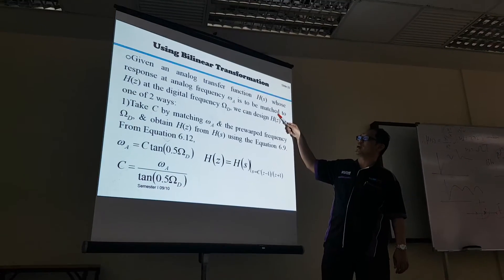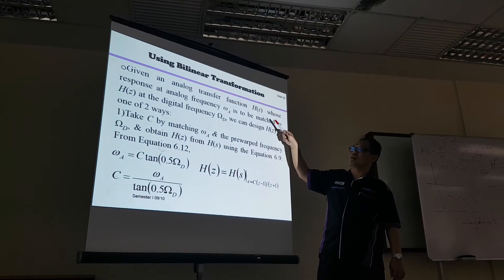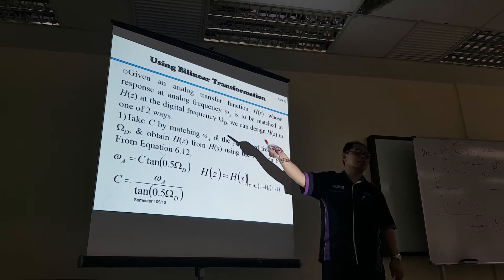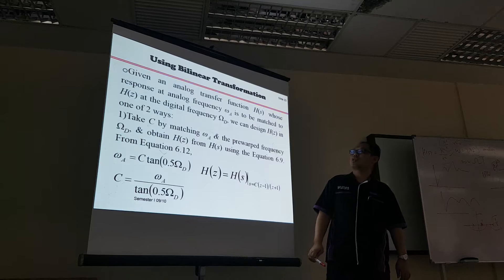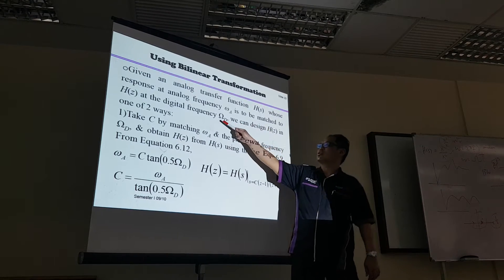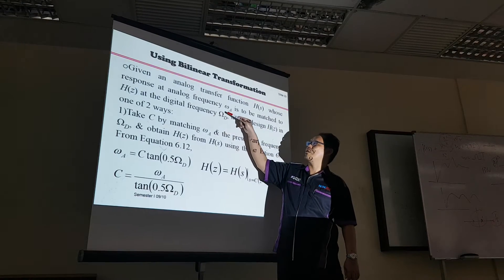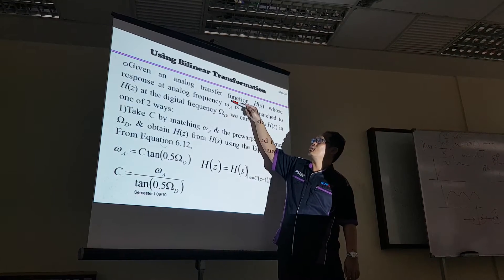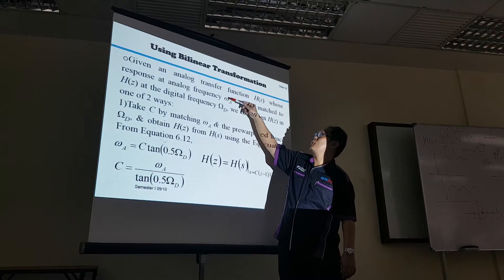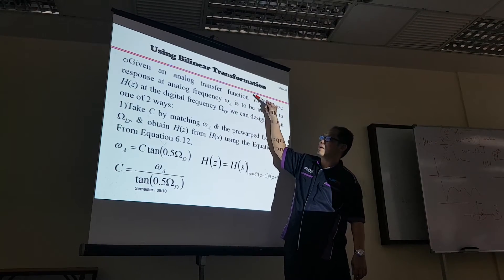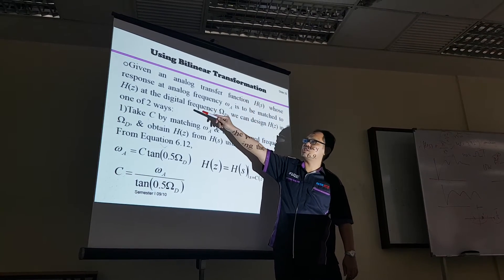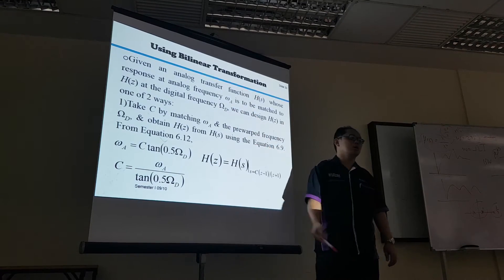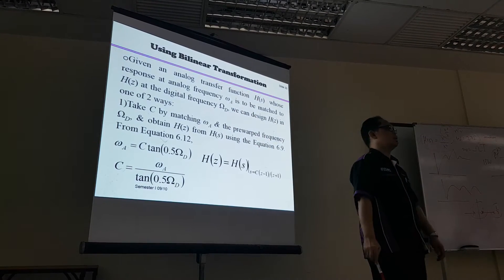We need to match H(Z) to the digital frequency domain. The transformation involves digital frequency Ω_D, and the analog frequency Ω_A is expressed in the form H(F). We need to match H(F) with H(Z) using digital frequency Ω_D.